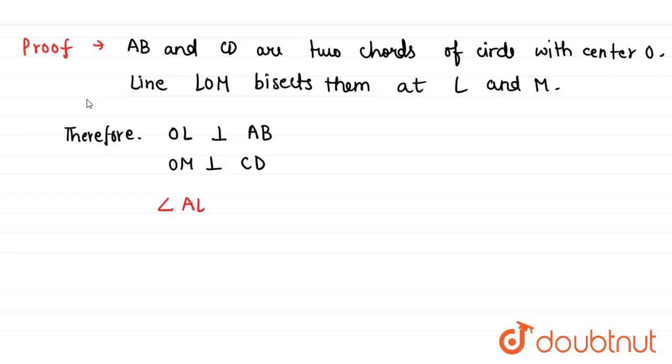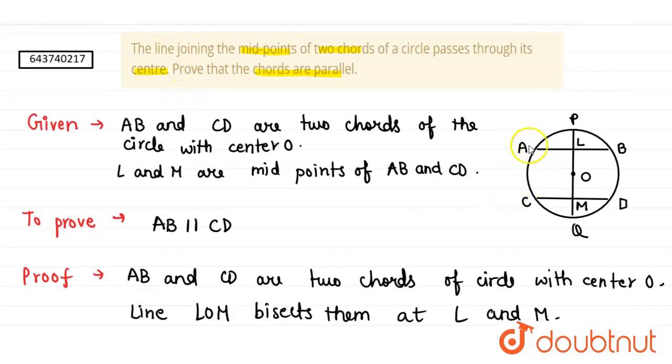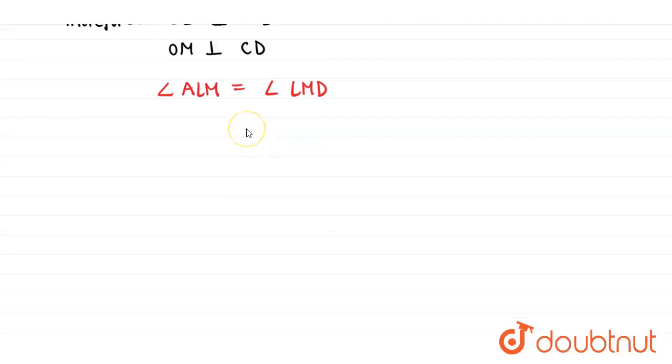Angle ALM is equal to angle LMD. We are talking about these two angles; they are equal because they are 90 degrees.